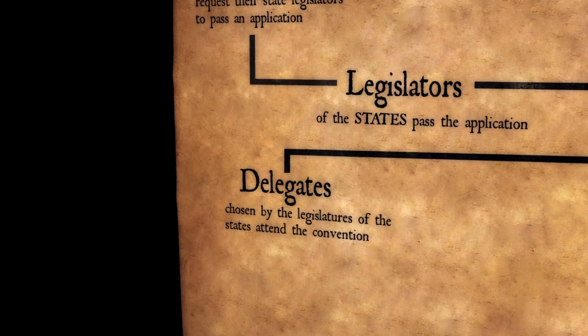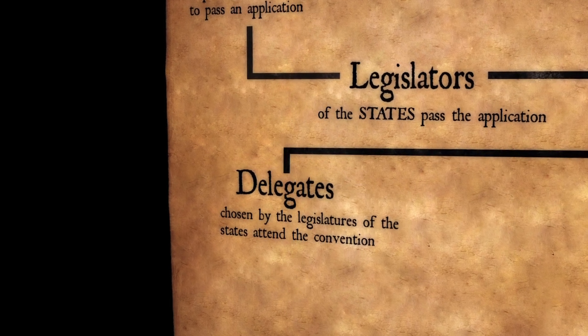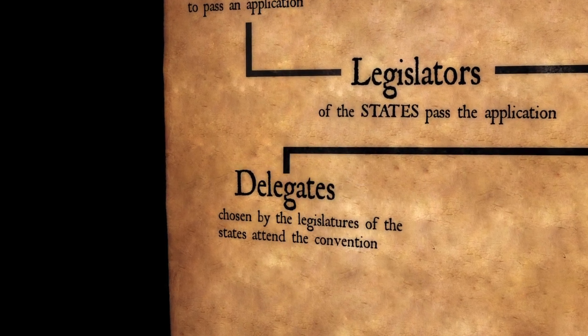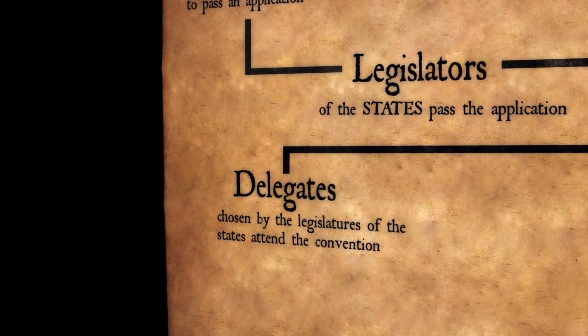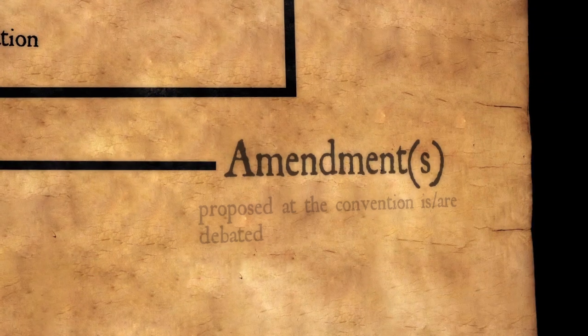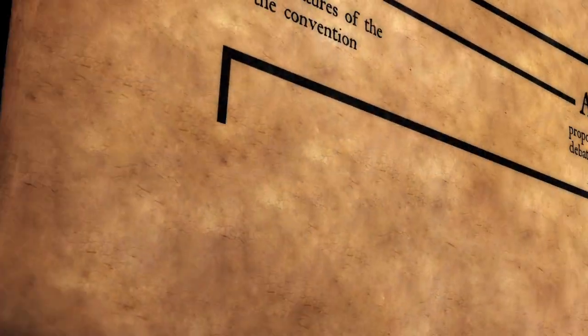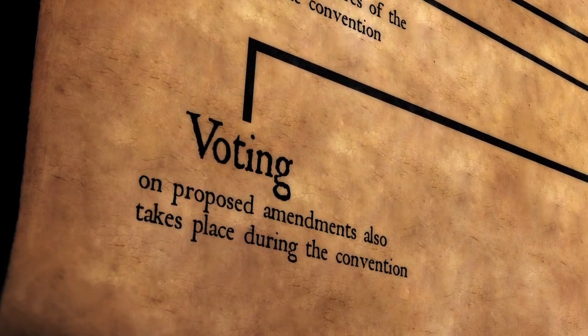Delegates, chosen by the state legislatures, attend the convention. Each state only gets one vote at the convention, but they can send as many delegates to represent the state as they so choose. Amendments are proposed, debated, and voted upon at the convention.